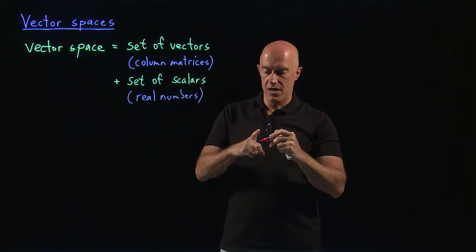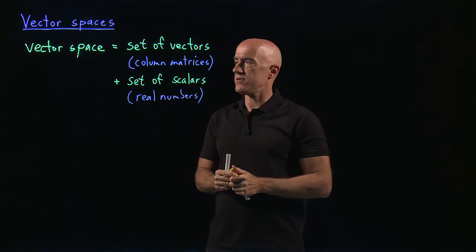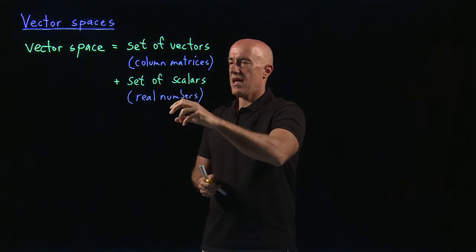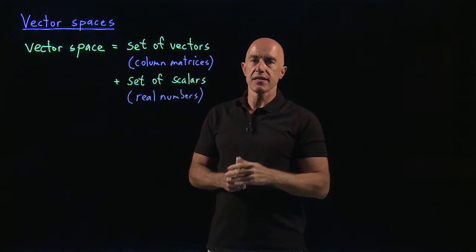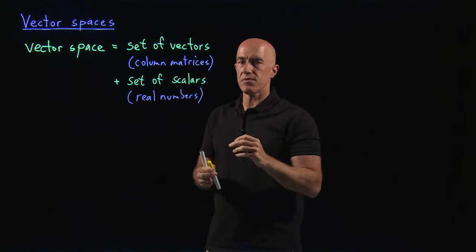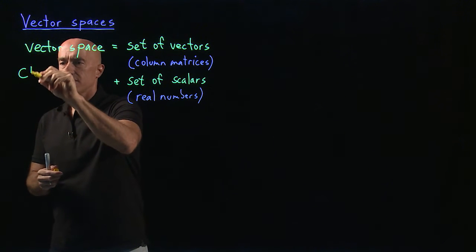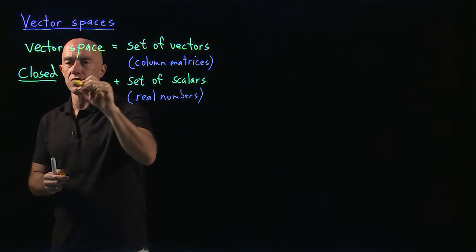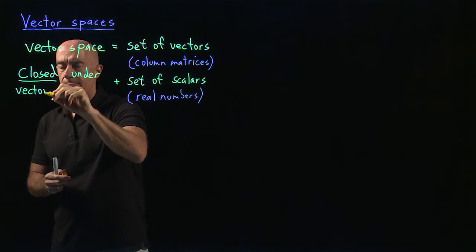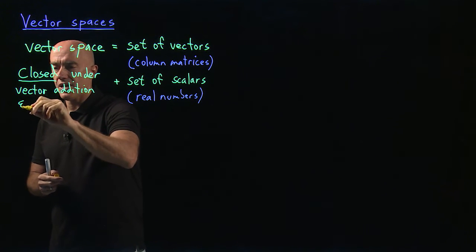Typically, the set of scalars can also be the set of complex numbers, but we won't deal with that in this course. So a vector space consists of a set of vectors — likely an infinite set — and a set of scalars such as the real numbers, with the key property that it is closed under vector addition and scalar multiplication.